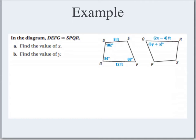Let's try an example. If we know that polygon DEFG — or quadrilateral DEFG — is congruent to polygon or quadrilateral SPQR, the order that the vertices are written in tells us something. We know that angle D corresponds with angle S because it's written first, so angle D has to be congruent to angle S. Regardless of how the pictures are rotated on the paper, if you match the vertices up, it will tell you which angles are congruent with each other.